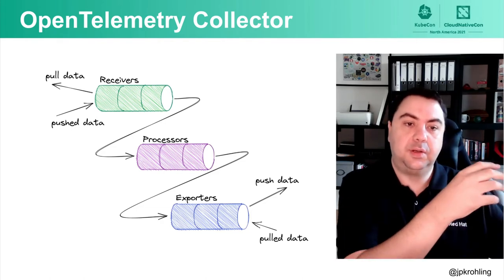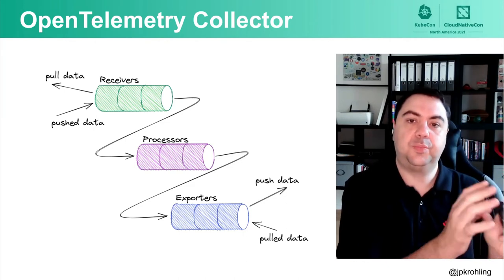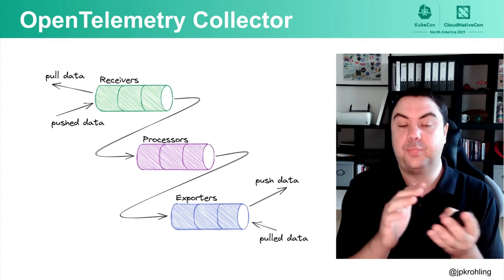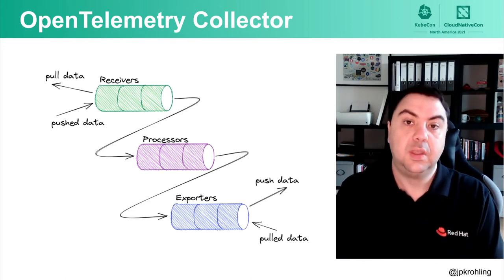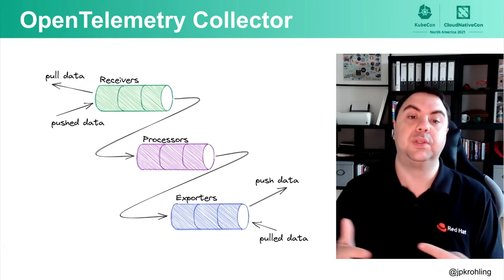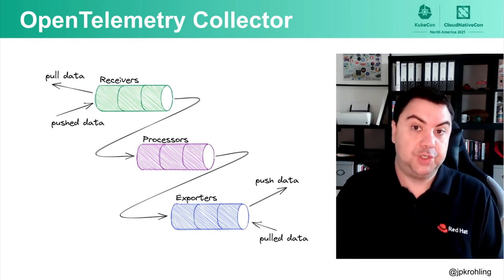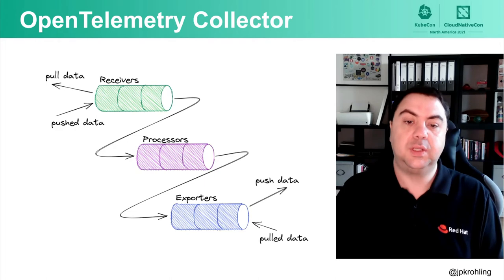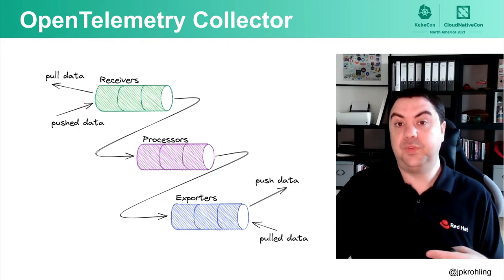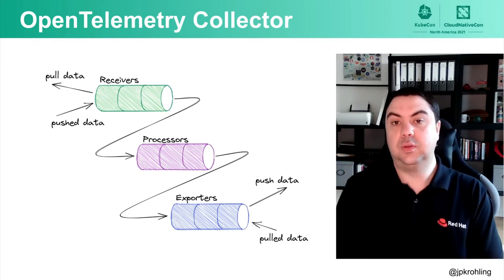Data is either received or pulled by receivers, which put data at the beginning of the pipeline. Once data flows through the pipeline, it reaches the processors, which have the ability to look into the data and take some action, or observe it and perhaps create a new data point. Once all processors have finished, data reaches the exporters. Exporters can be passive or active — sending data to a final destination or making data available for other systems to pull.